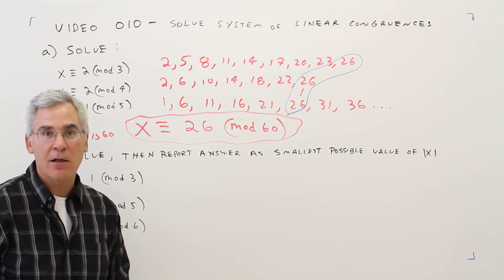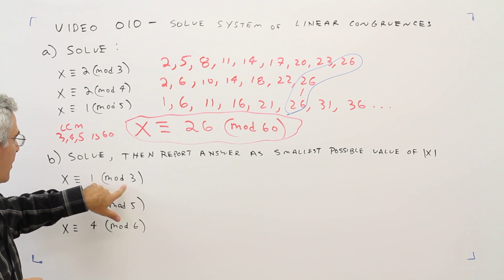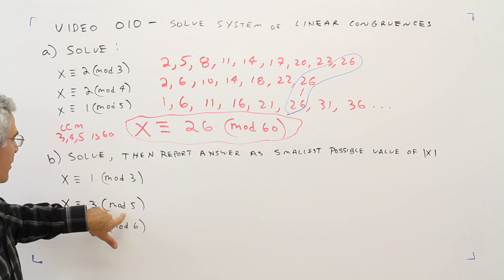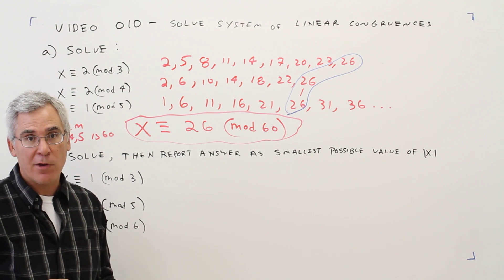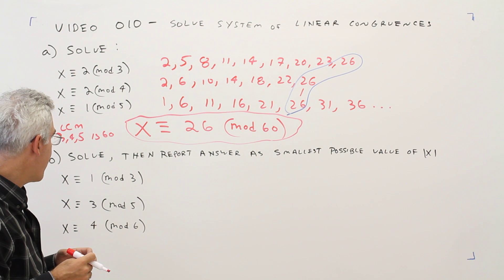I can do the same thing, but if you're smart, you can make an observation here. There's a difference of 2 here, a difference of 2 here, and a difference of 2 here. So I'm kind of dealing with the same quantity, if you will.